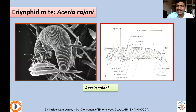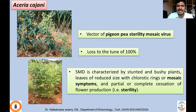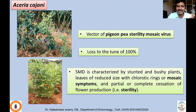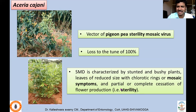A very serious mite pest, especially in red gram, is Aceria cajani, an eriophyid mite having only two pairs of legs — unlike other tetranychid mites which have four pairs. It very specifically damages red gram. The direct damage caused by Aceria cajani is less, but indirectly it transmits one of the deadliest viruses called Pigeonpea Sterility Mosaic Virus (PPSMV). Wherever this virus occurs, losses of up to 100 percent have been reported. If a plant at the vegetative stage carries the virus, there will be no flower production at all, and therefore no yield.